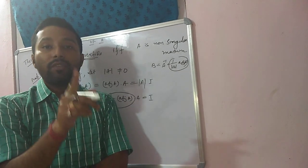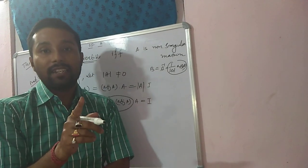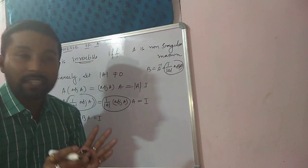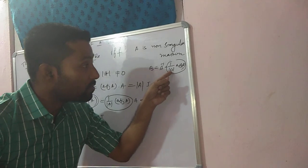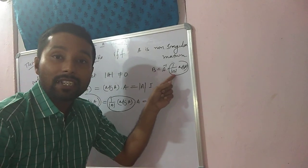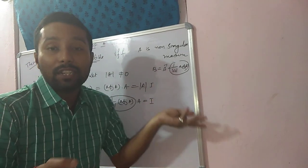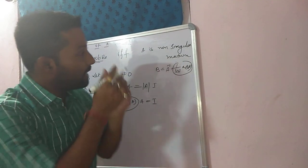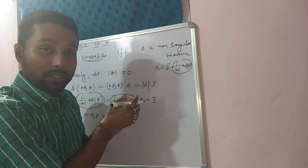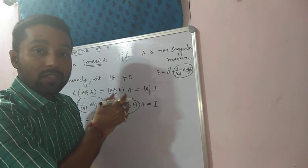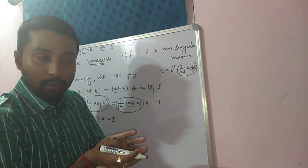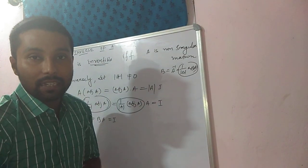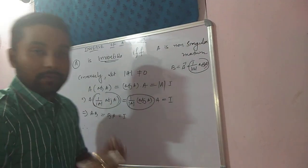If A is non-singular, inverse will exist. If singular, inverse will not exist because if determinant of A becomes 0, it becomes undefined. So this theorem is very important. When I upload the notes, write the theorem properly from those notes. Thank you.